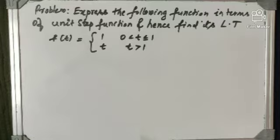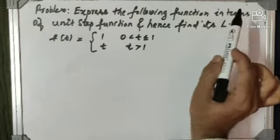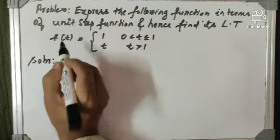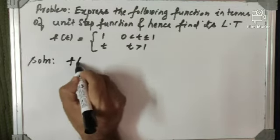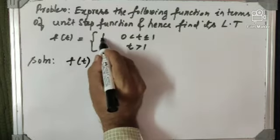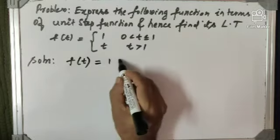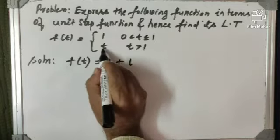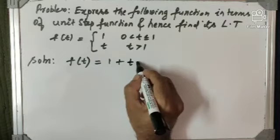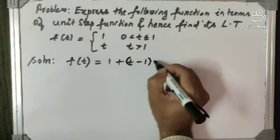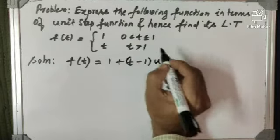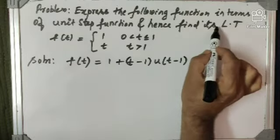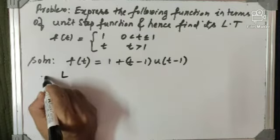Let us consider a problem. The question is: express the following function in terms of unit step function and hence find its Laplace transform. The solution is: first, we express this in terms of unit step function. The procedure gives f of t equal to the first function f1, which is 1, plus f2 minus f1, which is t minus 1, into u of t minus 1. Remember that the shift value is 1.